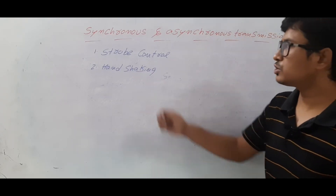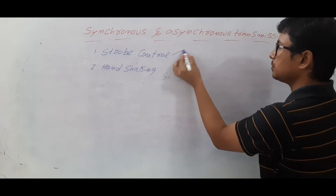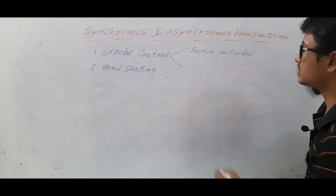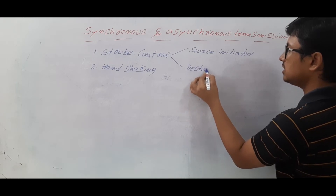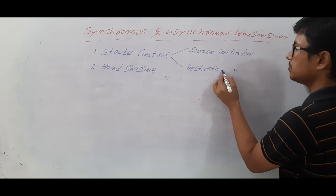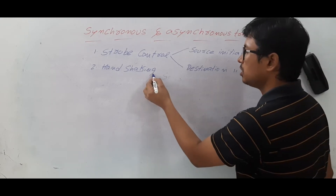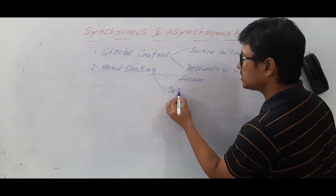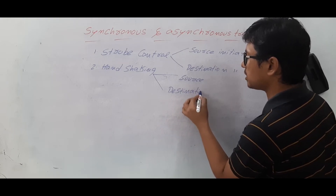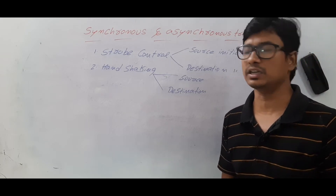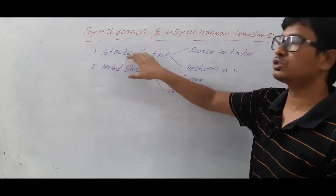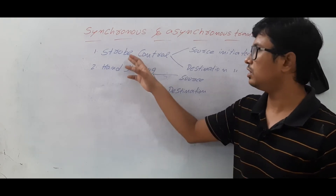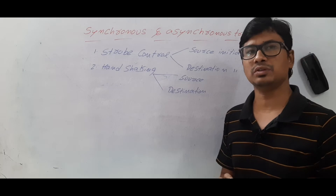These two mechanisms are further divided into sub-types. Strobe control signals are classified into source-initiated strobe control signals and destination-initiated strobe signals. Similarly, the handshaking mechanism is also classified into source-initiated handshaking mechanism and destination-initiated handshaking mechanism. So synchronization can be achieved using either strobe control signals or the handshaking mechanism in asynchronous communication.